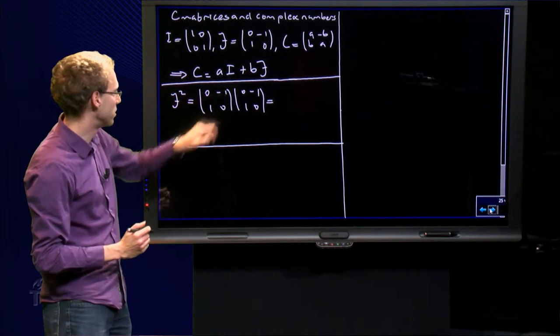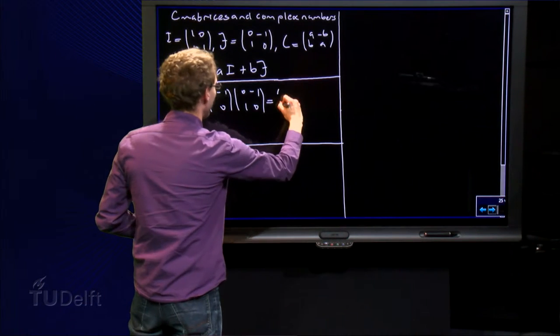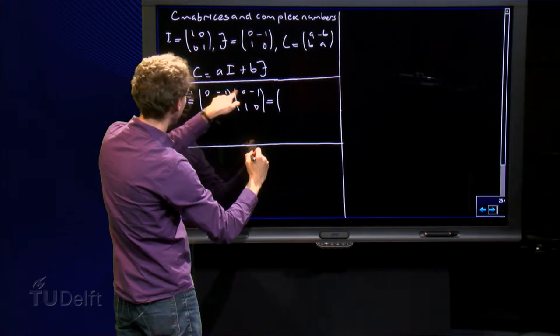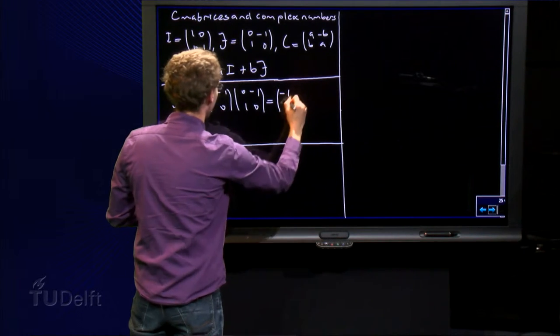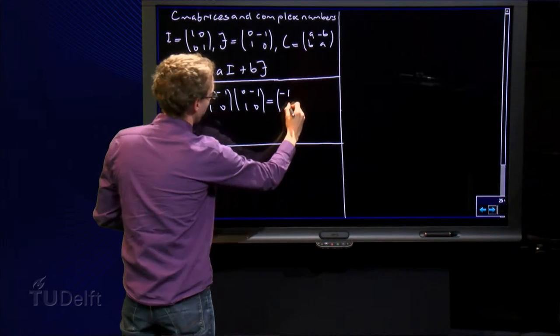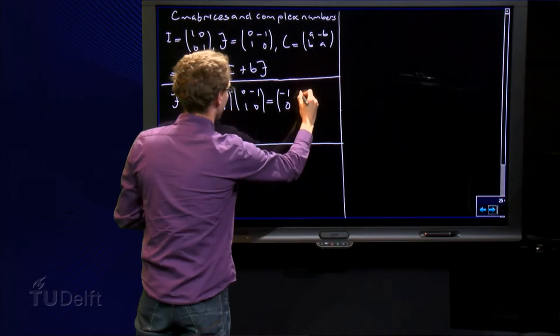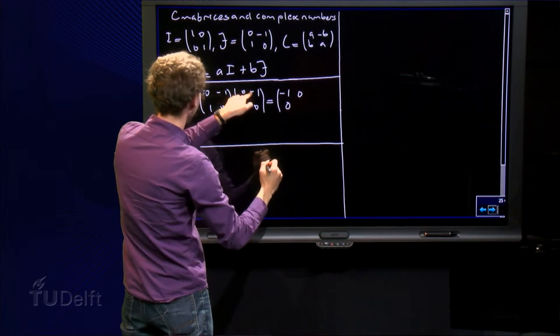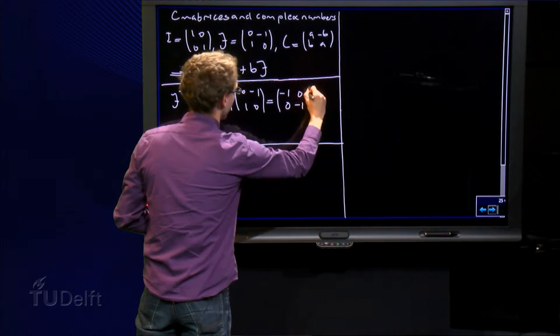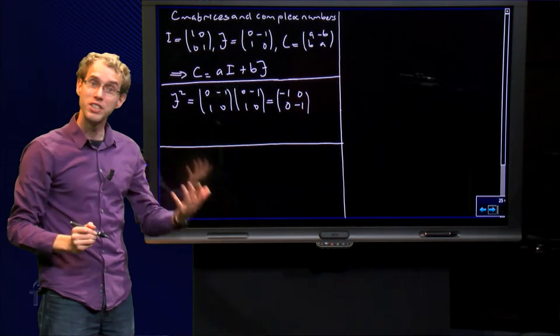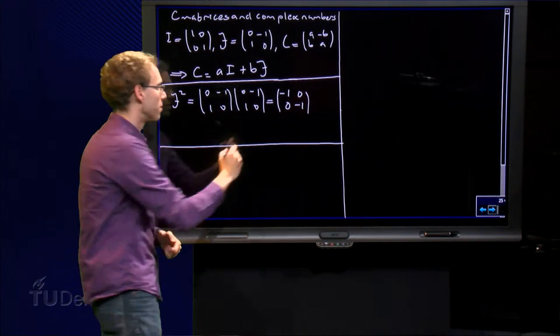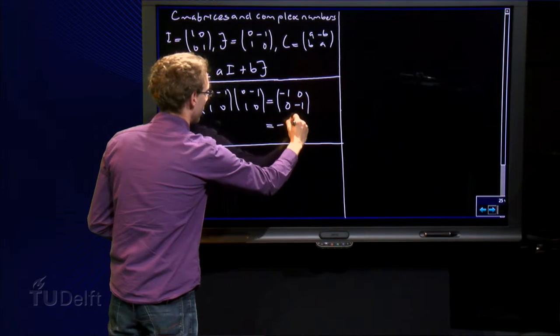So I have J squared, J times J, so let us see, what do we get? 0 minus 1, 0 plus 0 equals 0, 0 plus 0 equals 0, and minus 1 plus 0 equals minus 1. So what do we see, J squared equals minus I.